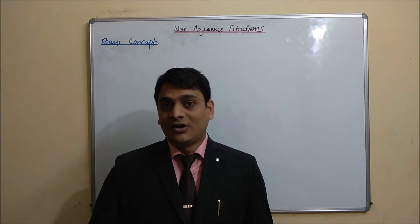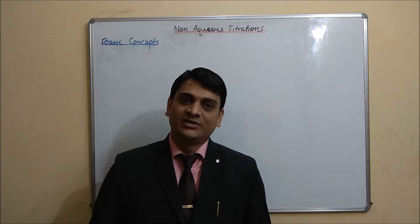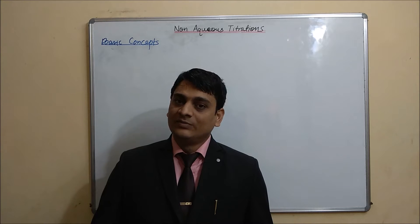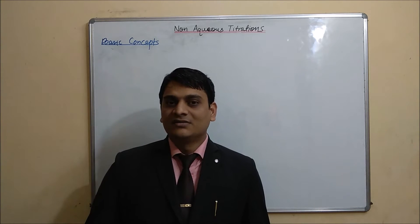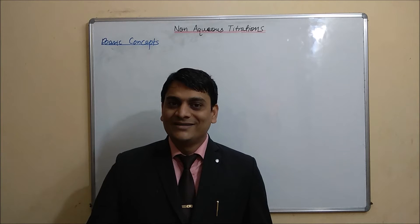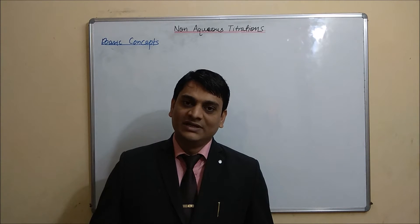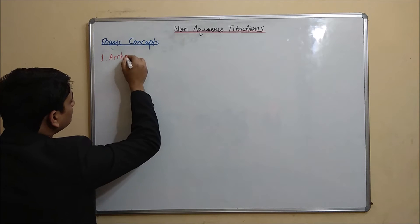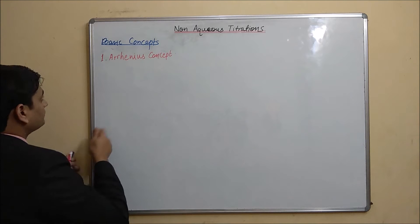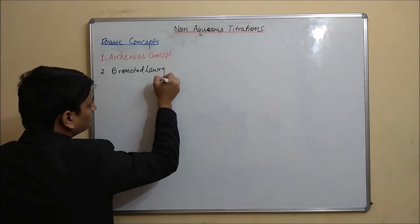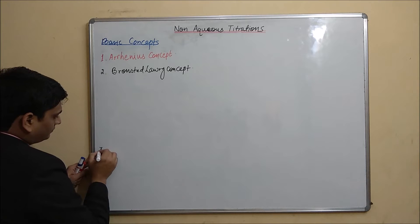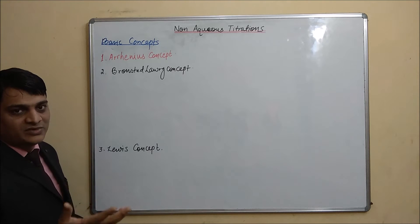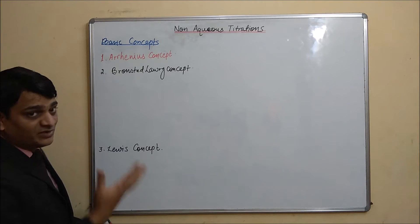In normal acid-base titration, or aqueous acid-base titration, commonly three concepts are applied. First one is the Arrhenius concept, second one is the Bronsted-Lowry concept, and third one is the Lewis concept. These are the three concepts which are involved in normal acid-base titrations.